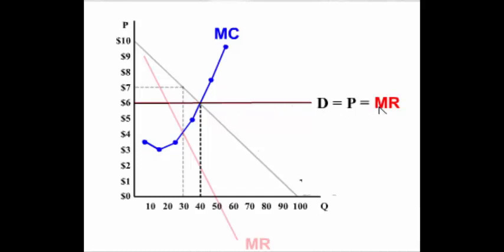If opened to a perfectly competitive market, the demand curve would become more elastic, and once perfectly elastic, D equals P equals MR. That is where allocative efficiency takes place. Notice that the monopolist reduces output to maximize profits and raises its price — so the monopoly is allocatively inefficient.